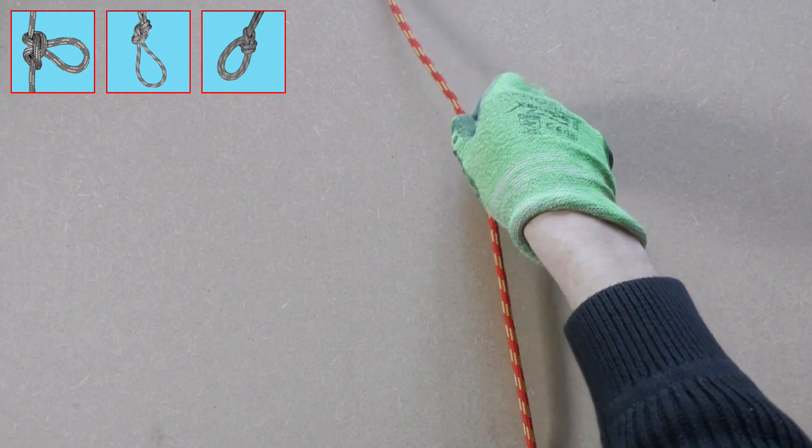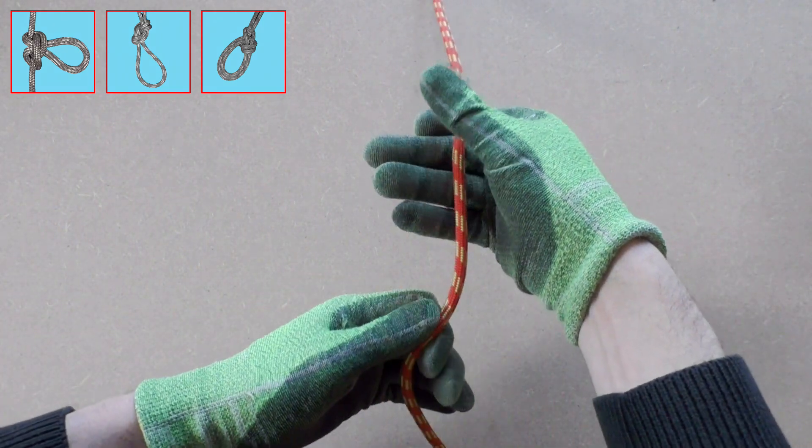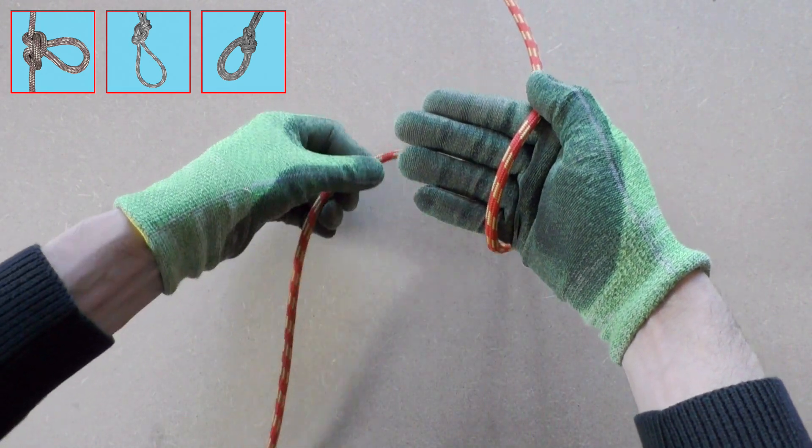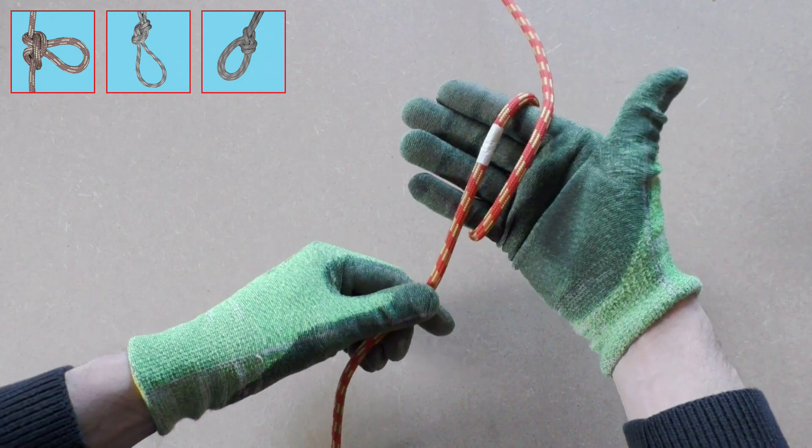The first method to create a loop in a rope is by using the alpine butterfly knot. Here we tie the alpine butterfly knot by using the fast hand wrap method.